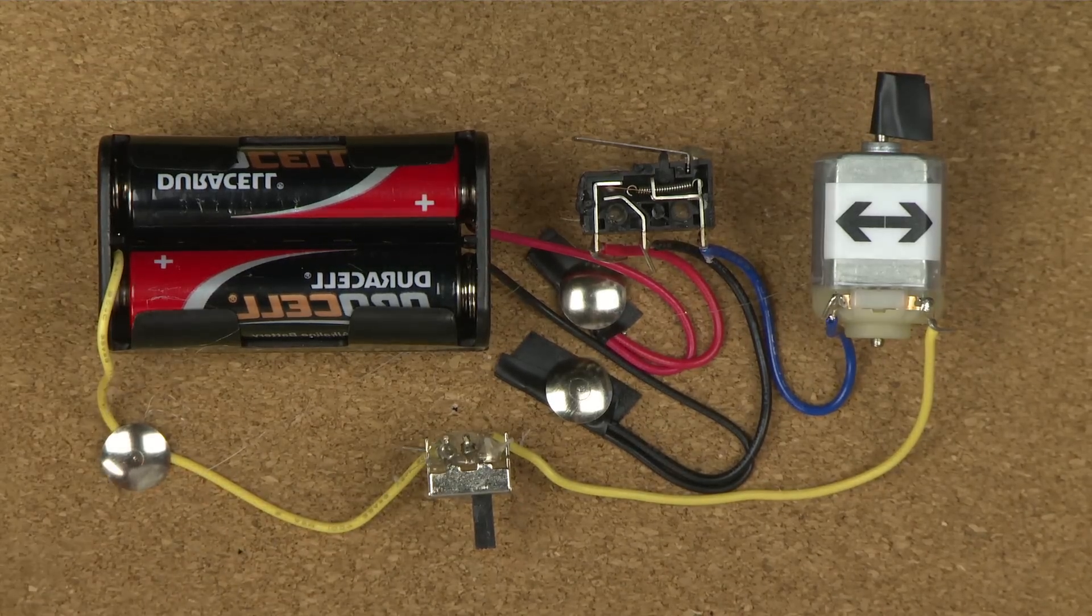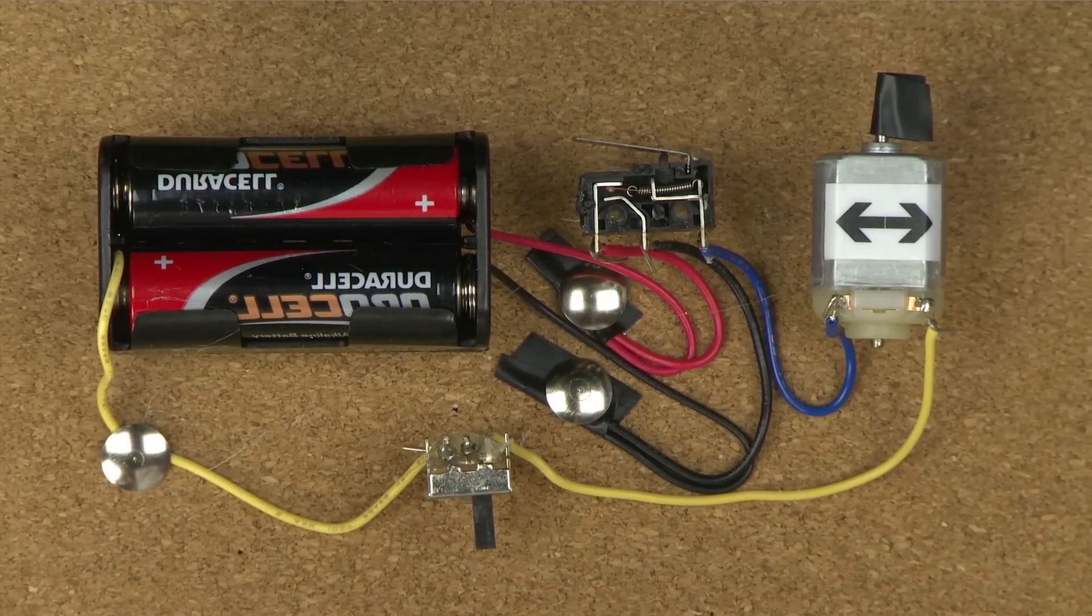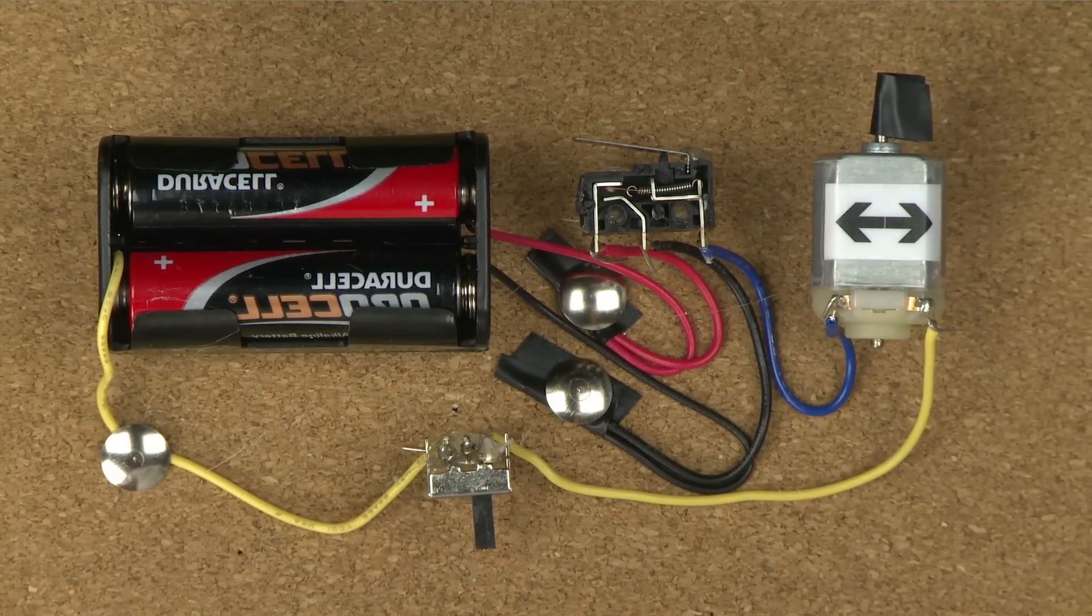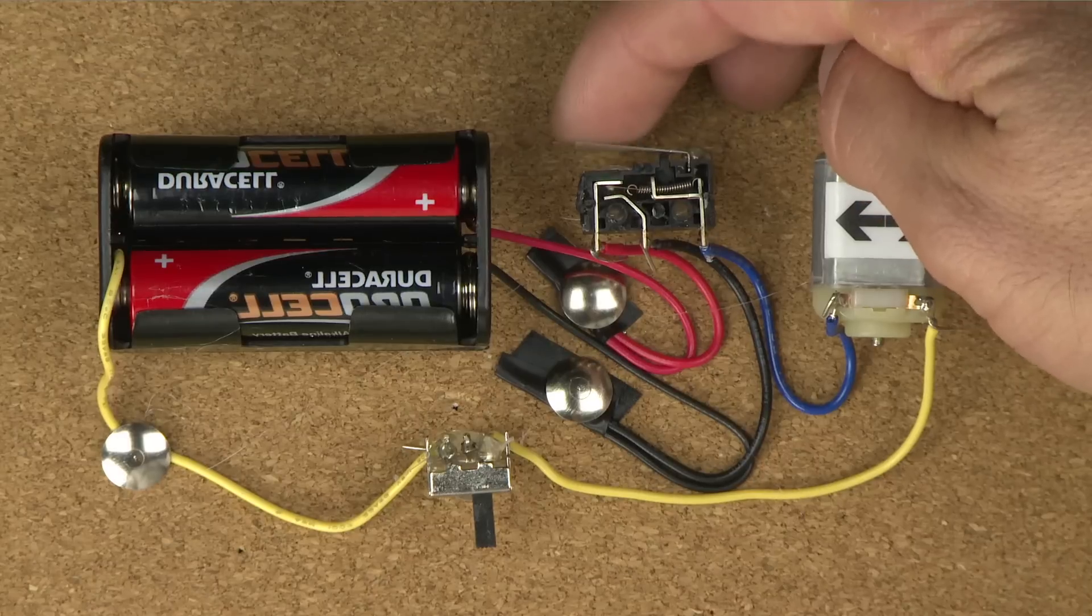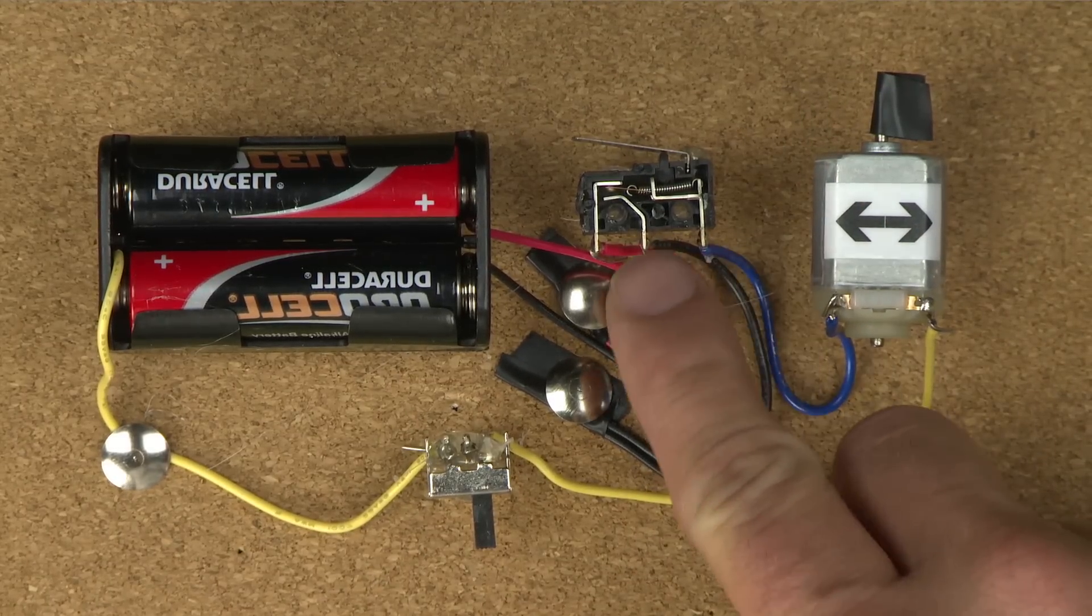So this circuit combines the best of both worlds. We've got the forward and the reverse capability with this one because we added something called a single pole double throw lever switch. It's called a lever switch because it's got a little lever here. And it's a single pole double throw because there's one pole and two throws.